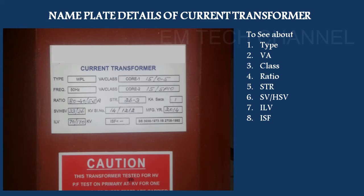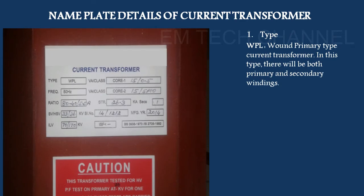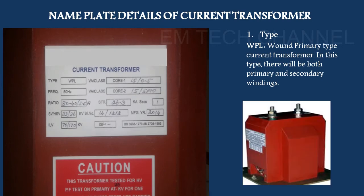First, the type. What type is it? This is the current transformer construction. One is Wound Primary Type, one is Bar Type, and one is Toroidal or Window Type. This is the primary and secondary of the current transformer. You can see P1 and P2 — these are the primary terminals — and the secondary terminal.